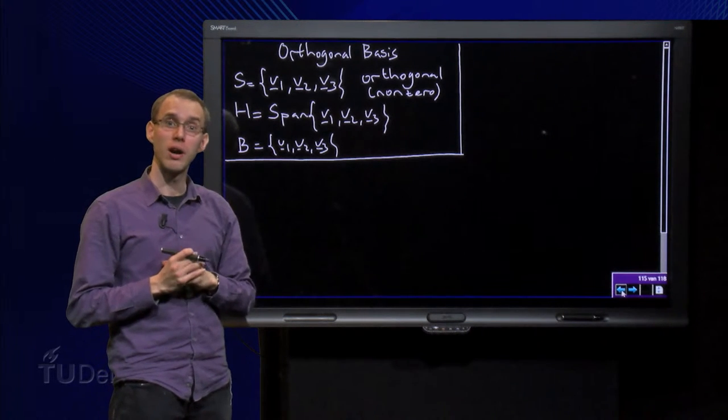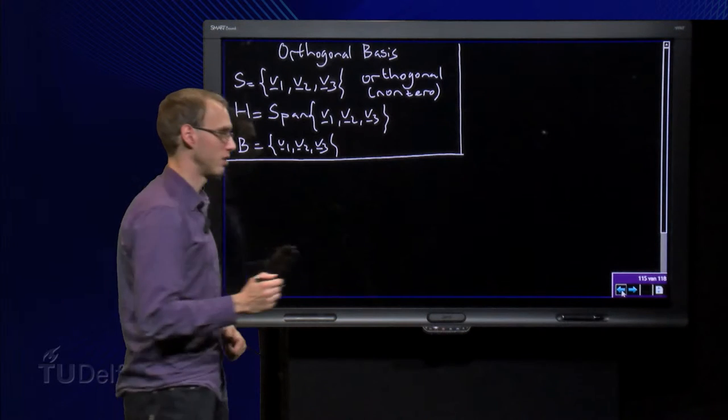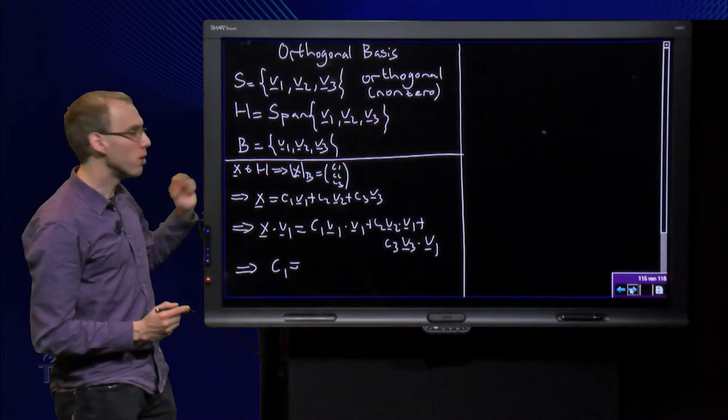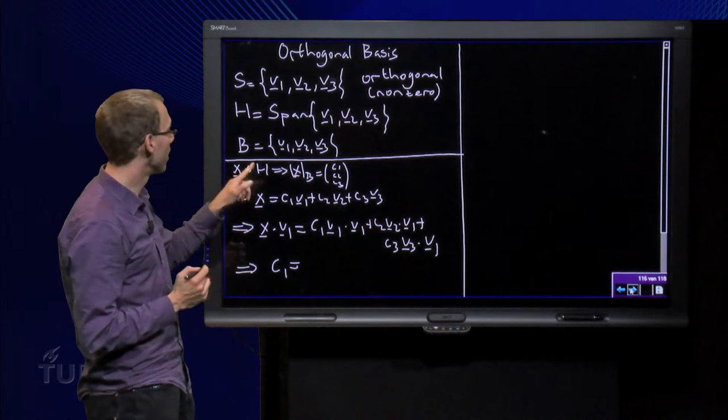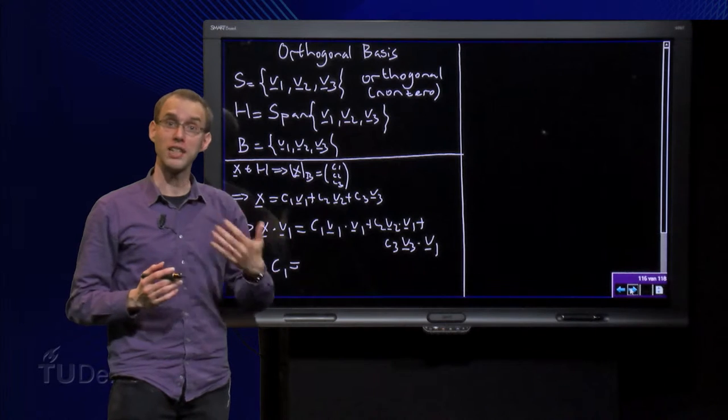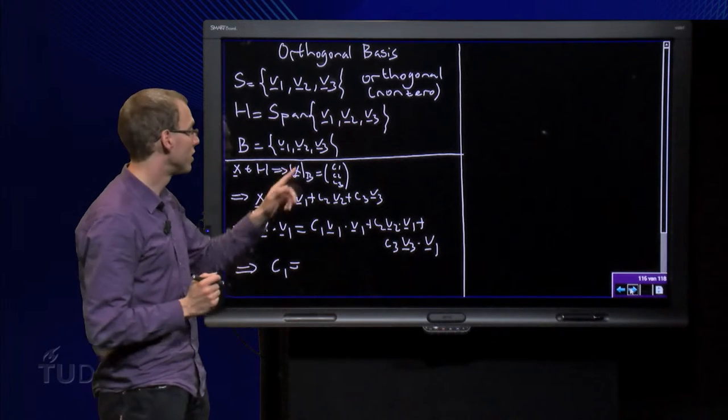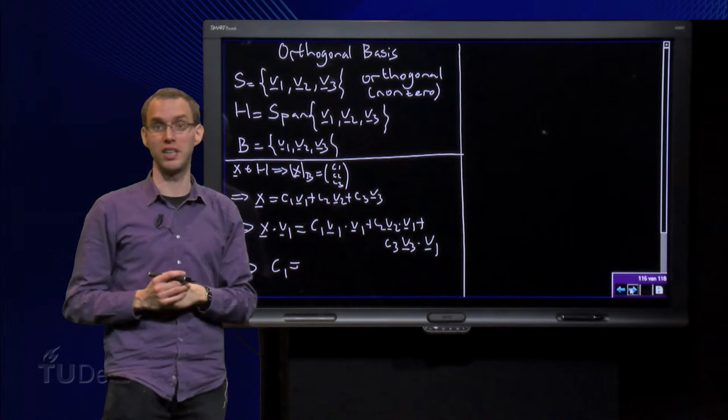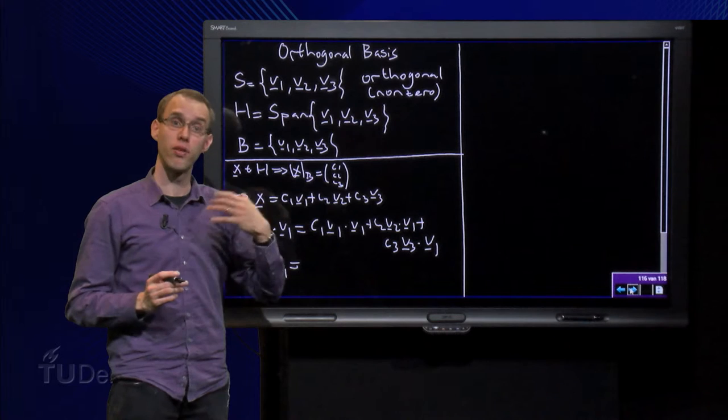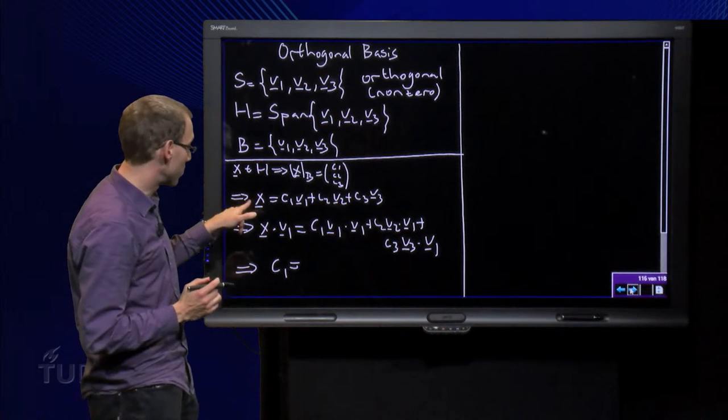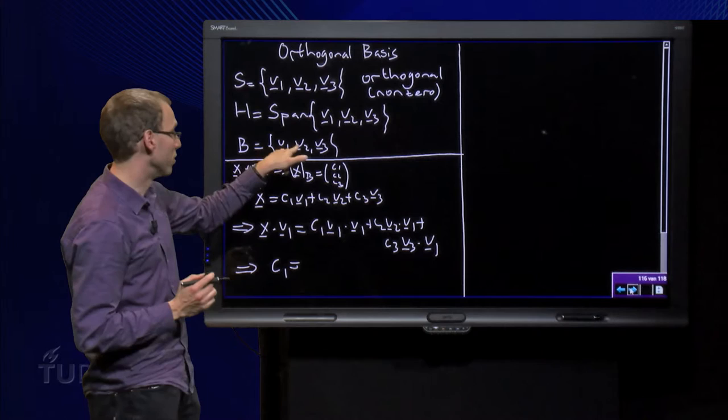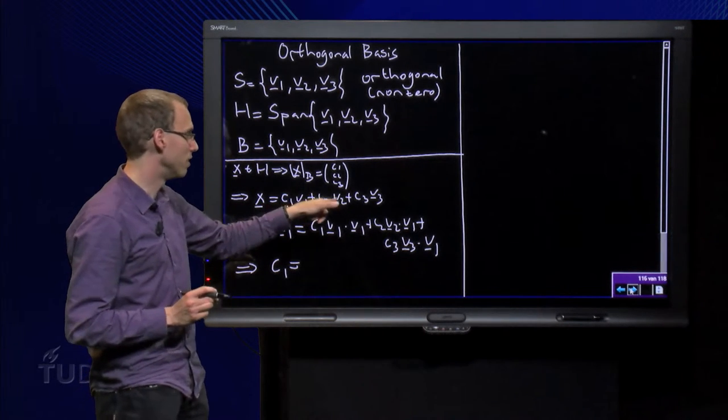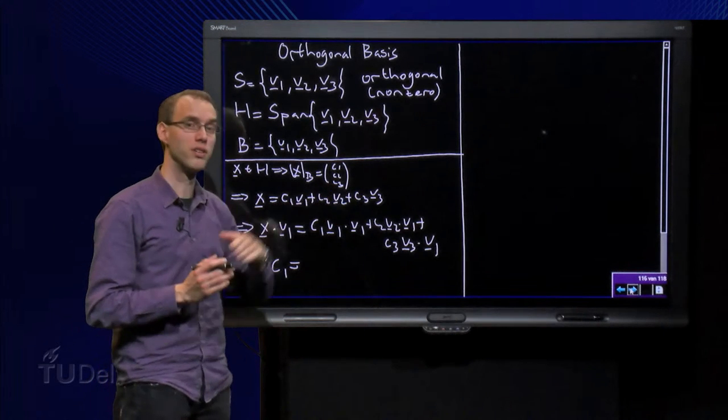Now let's see how we can compute coordinate vectors. Suppose we have a vector x in H. Then the coordinate vector of x with respect to B contains three weights, c1, c2 and c3 because there are three vectors in B. Then I can express x in terms of v1, v2 and v3: x equals c1 times v1 plus c2 times v2 plus c3 times v3.